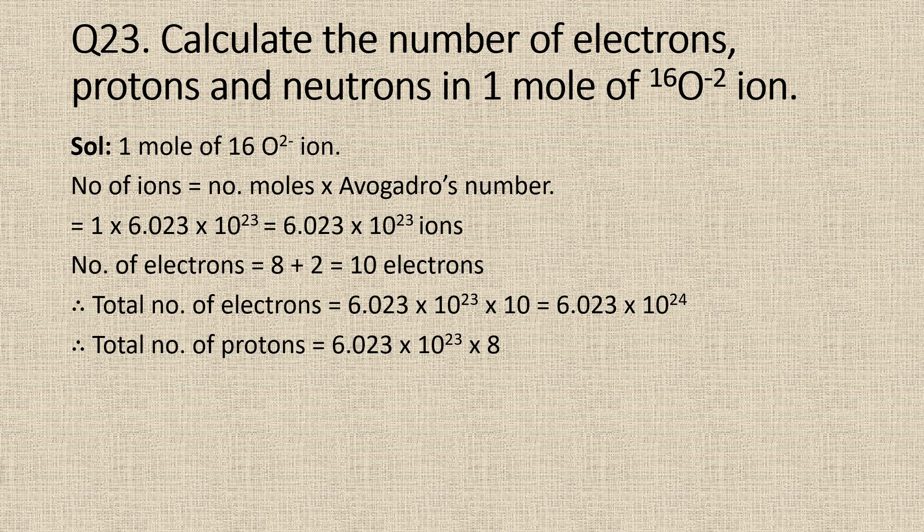The number of protons in each oxygen atom is equal to 8, which is equal to its atomic number. Since the total number of O2 minus ions is equal to Avogadro's number of ions, the total number of protons will be Avogadro's number into 8, which is equal to 6.023 into 10 to the power 23 into 8.